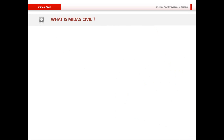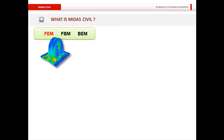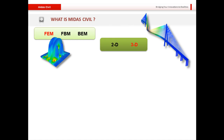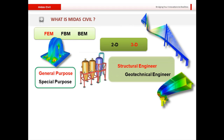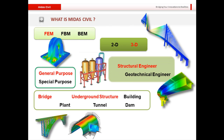MIDAS Civil is a 3D finite element-based package geared towards bridge engineers, but it is by no means limited to them. It is a general purpose product that can be used to model structures like plant structures, tanks, silos, dams, tunnels, and more. Even a geotechnical engineer can find use for it, though specific design functions are available for bridge models only.